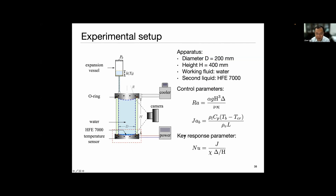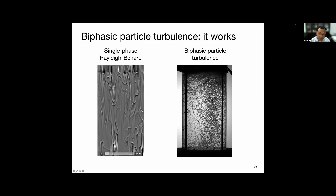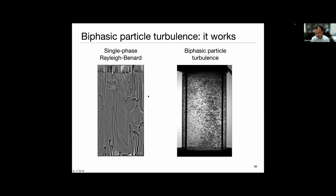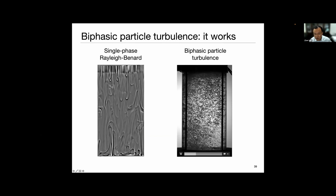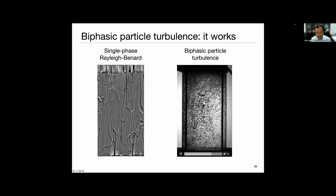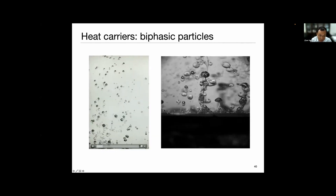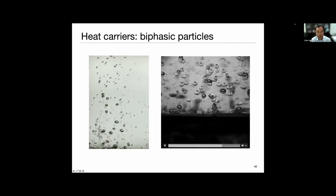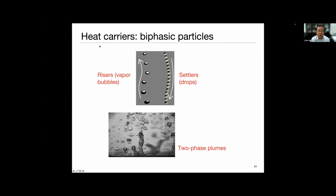To test this, we built an experimental setup maintaining a constant temperature difference while changing the mean temperature - specifically the bottom temperature - to vary the superheat of the second fluid relative to its boiling point. We measure the heat transfer efficiency. For the single-phase Rayleigh-Bénard convection system, you get hot and cold plumes and large circulation. In our two-phase system, we get lots of vapor bubbles and falling droplets, with two-phase plumes near the bottom plate. There are rising bubbles, falling droplets, and two-phase plumes pinching off from the bottom plate.